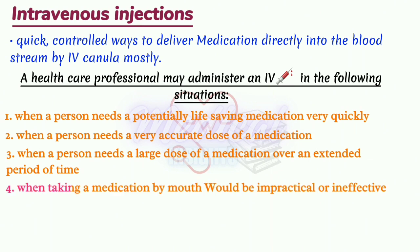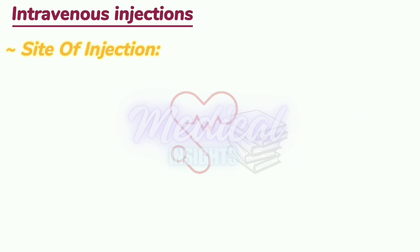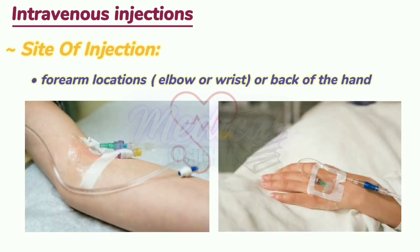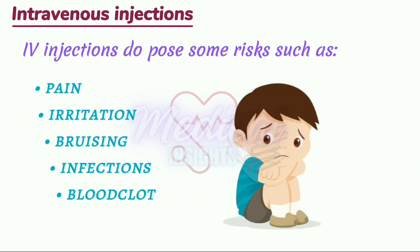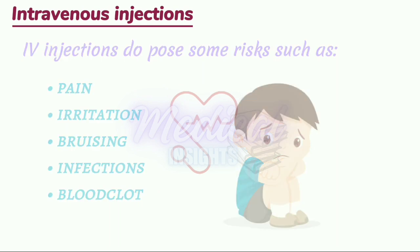IV injections are also used when taking a medication by mouth would be impractical or ineffective, or when a person cannot eat or drink and requires fluids through an IV line. Some common sites include forearm locations such as the wrist, elbow, or back of the hand. Some situations may require using the outer surface of the foot. IV injections do pose some risks such as pain, irritation, bruising, infections and blood clots.